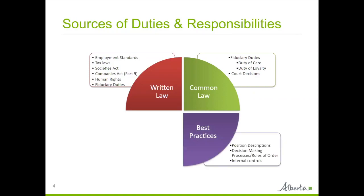The third source of duties and responsibilities of board members is best practices. Best practices include effective and helpful ideas that your organization can choose to adopt. Adopting best practices can help improve role clarity within the organization and give you the tools you need to have active oversight over what is going on. Position descriptions and internal controls are some examples. Another example is a common policy that at least two board members need to sign all checks in the organization. With this policy in place, no one person can have full access to the organization's money. This is not a law — you're not legally required to do this — but it is an example of best practices that provides the board with oversight over the finances of the organization.